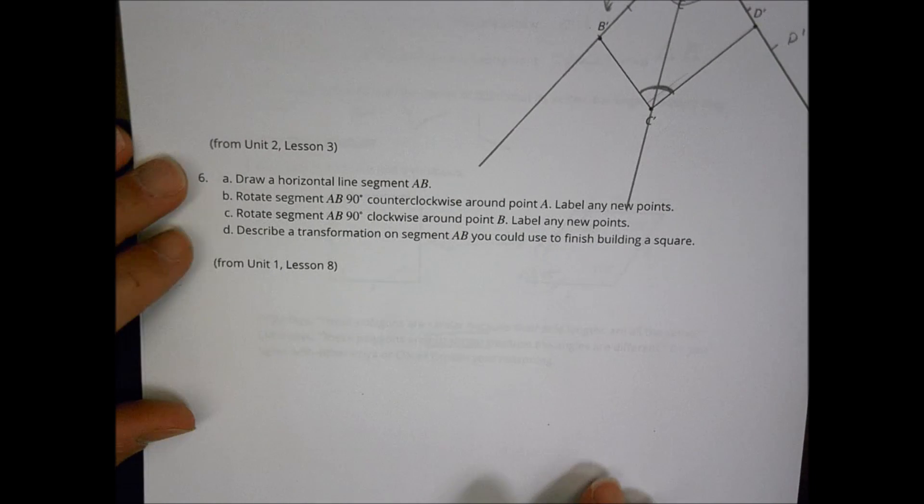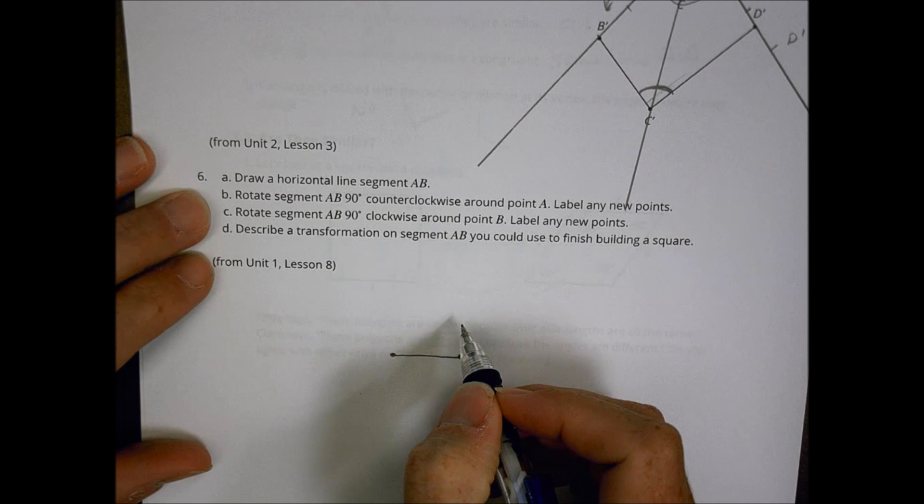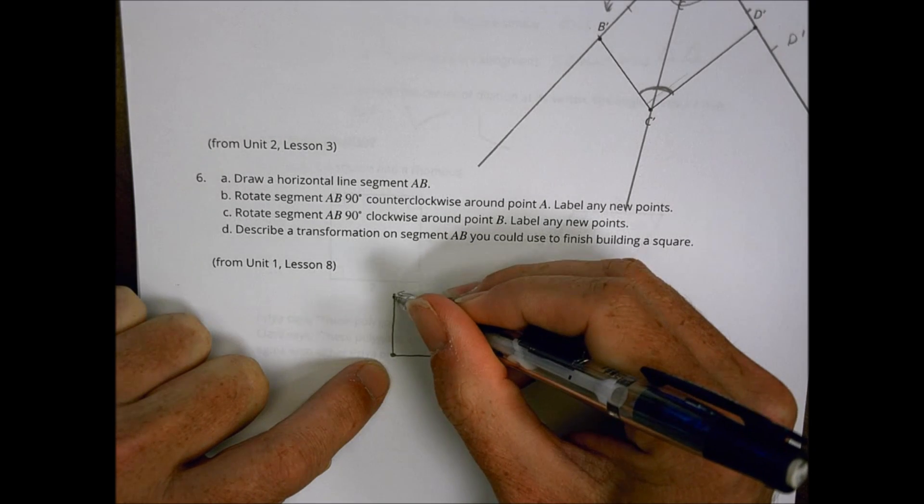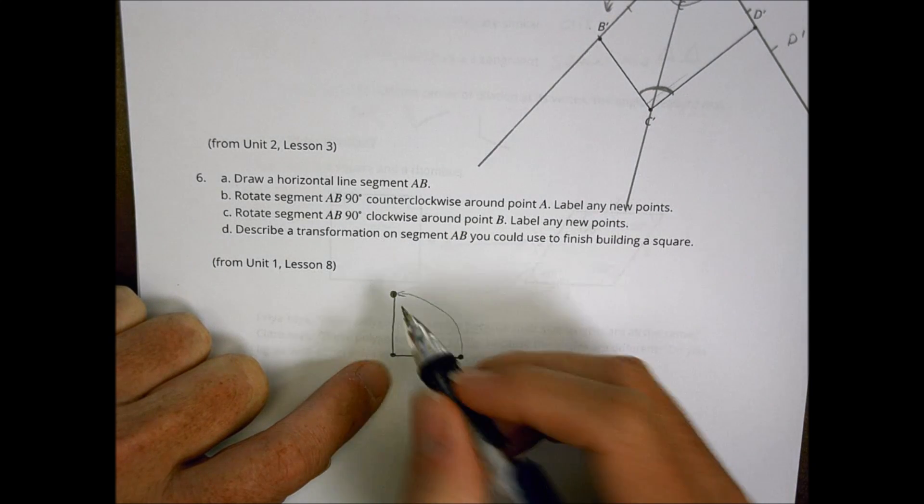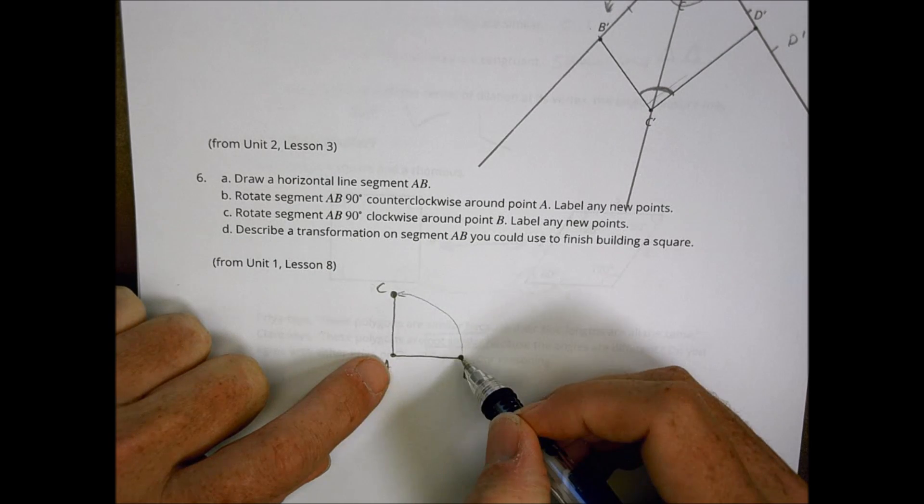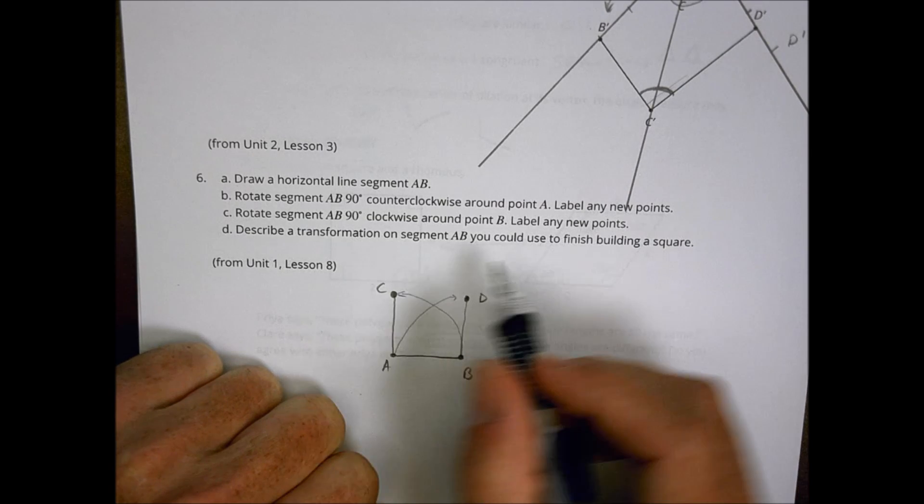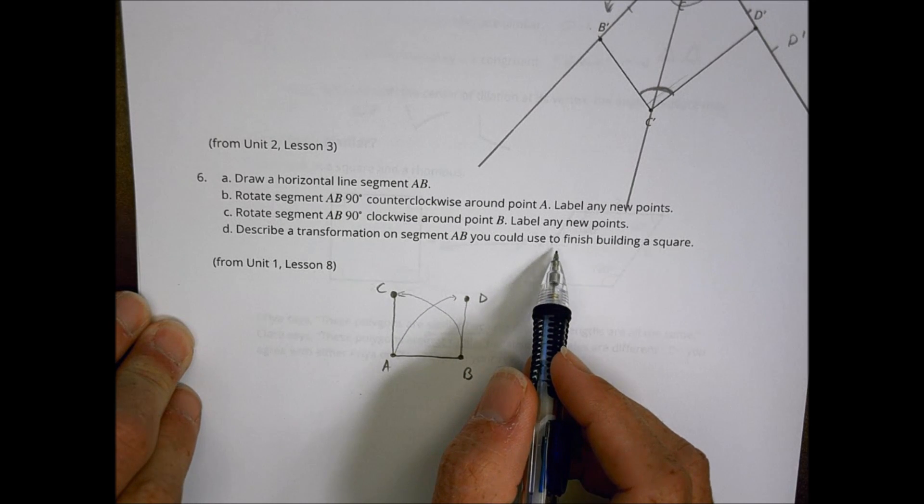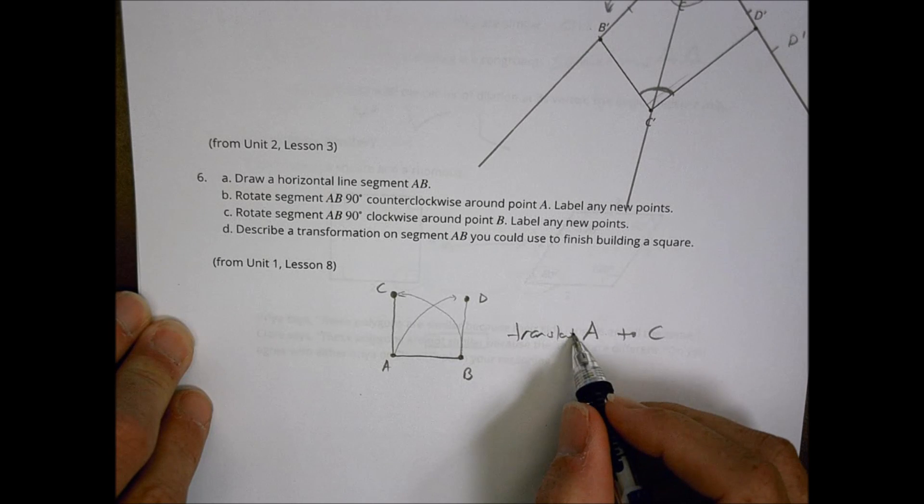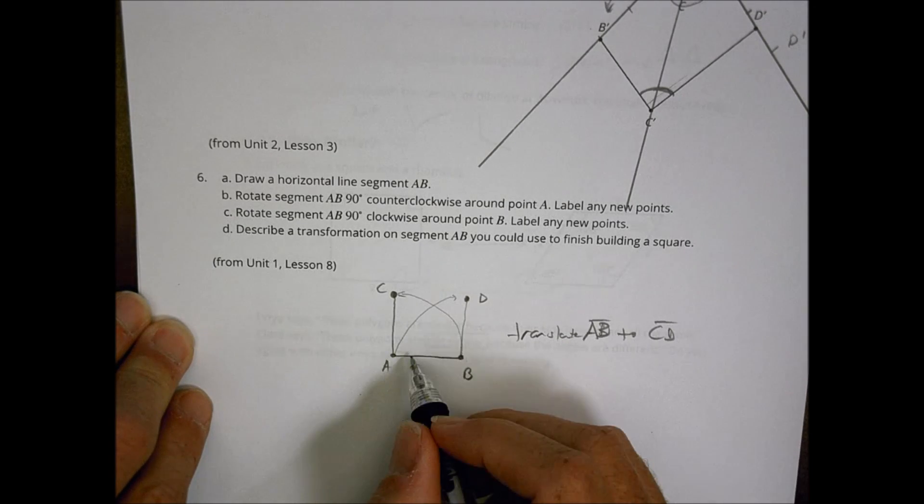And finally, number six. It says, draw a horizontal line segment AB. So, we draw a line segment AB like so. Rotate segment AB counterclockwise around point B. So, if that's my point, I'm going to rotate this counterclockwise 90 degrees. And I end up with something about there. I can label that new point C. So, here's A, here's B, here's C. It says, rotate segment AB clockwise around point B. So, I go over there and I drop that up here. And I put this there. And I might have point D by moving that there. And then, describe a transformation on segment AB you could use to finish building a square. So, we would translate A to C, moving this to that. Or we could say, translate AB to CD. And that would just move this whole thing from there to there.